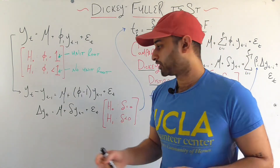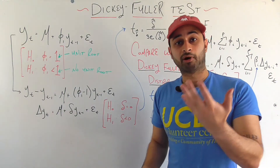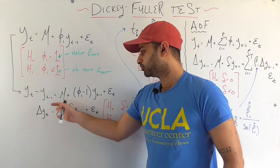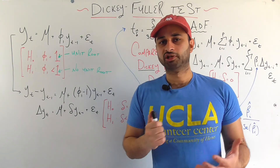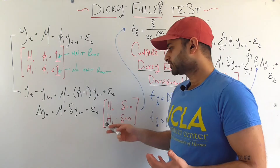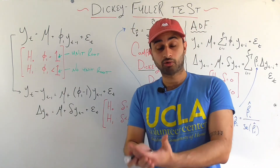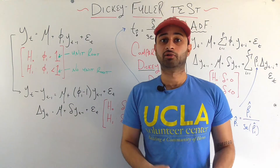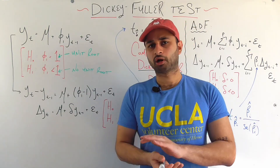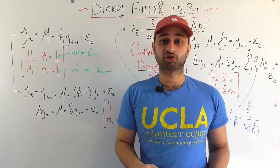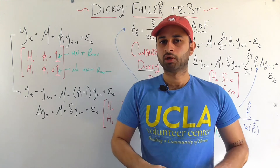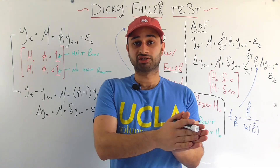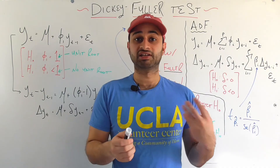The reason we did this transformation is to make the left hand side stationary. Assume the null hypothesis is true — that delta equals 0. Then your time series equals mu plus epsilon_t, which is normally distributed random noise, meaning delta y_t is stationary under the null. Now the reason we can't just do a simple t-test for the value of delta is because y_{t-1} is still non-stationary under the null hypothesis. It turns out we can compute the same t-statistic, but we compare it against a specialized distribution called the Dickey-Fuller distribution.